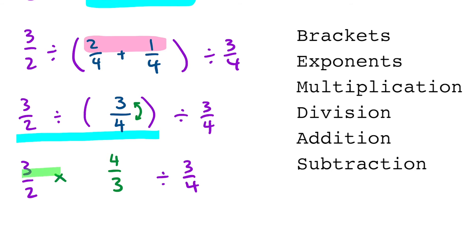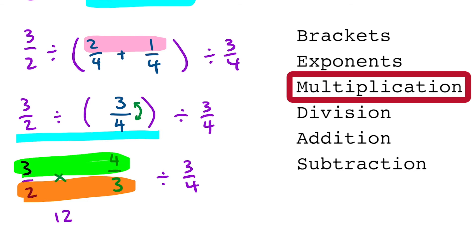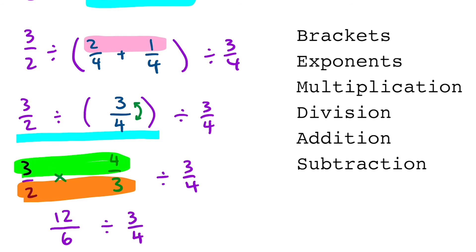Now we're going to multiply the top of the fraction: 3 times 4, and multiply the bottom of the fraction: 2 times 3. So on the top, 3 times 4 is 12, and on the bottom, 2 times 3 is 6. Keeping the rest of the equation the same.